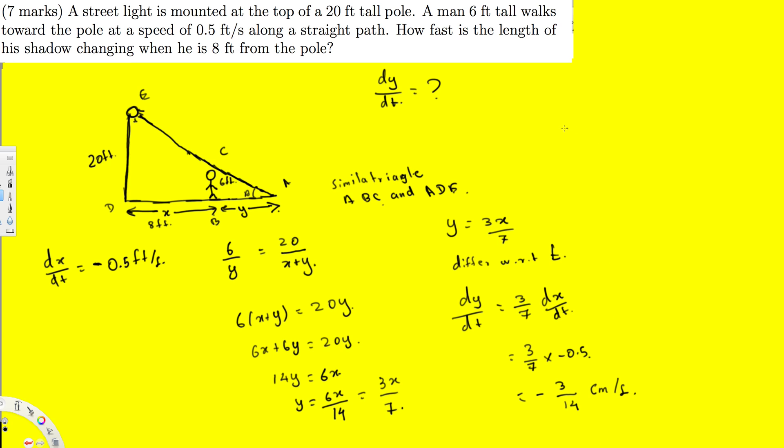And that's how it's done. And also you can, at the end, you can mention. Therefore the length of his shadow is decreasing because it's negative sign. So whenever we have negative sign, we can mention that decreasing, decreasing by the rate of. So whenever we say decreasing, we don't have to write the negative sign by the rate of 3 over 14 feet per second. So that's the final answer.